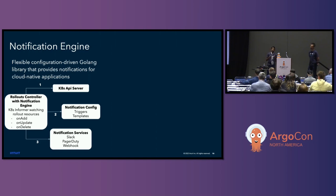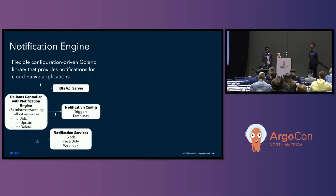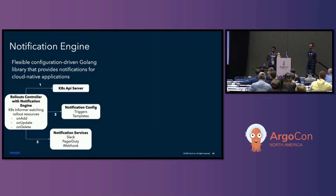We use Notification Engine to accomplish a lot of what we'll talk about today. Notification Engine at a high level is a configuration-driven Golang library that provides you the ability to configure notifications for cloud-native applications. We're using it for Rollouts and CD, but you can use it for any cloud-native application. What Notification Engine provides is a Kubernetes informer that watches a particular resource — in this case, rollout resources — watching for add, delete, or update events. When it detects those changes via the Kubernetes API server, it looks at the configuration, which is basically a bunch of triggers and templates, and based on those, sends out the appropriate notification to Slack, PagerDuty, a custom webhook, or whatever you've configured.